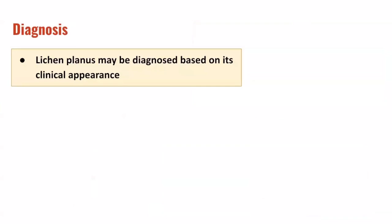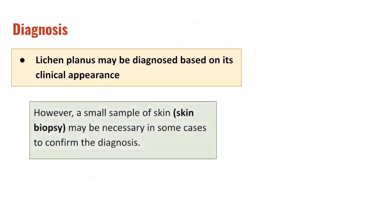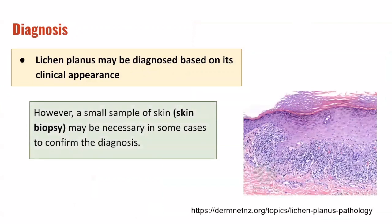How do we make a diagnosis of lichen planus? It is typically a diagnosis based on clinical appearance. However, in some cases, a skin biopsy may be necessary to confirm the diagnosis and exclude other differentials. This is the classic appearance under the microscope when we examine the histology of lichen planus lesions. We can see a classic lymphocytic infiltrate at the interface between the epidermis, which is the top layer of the skin, and the dermis.